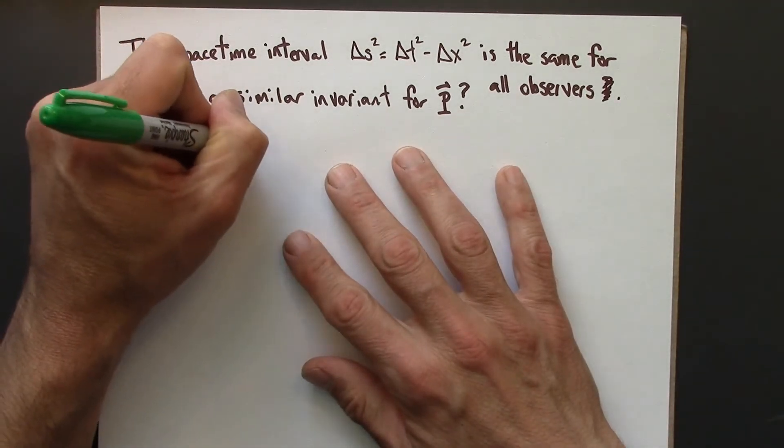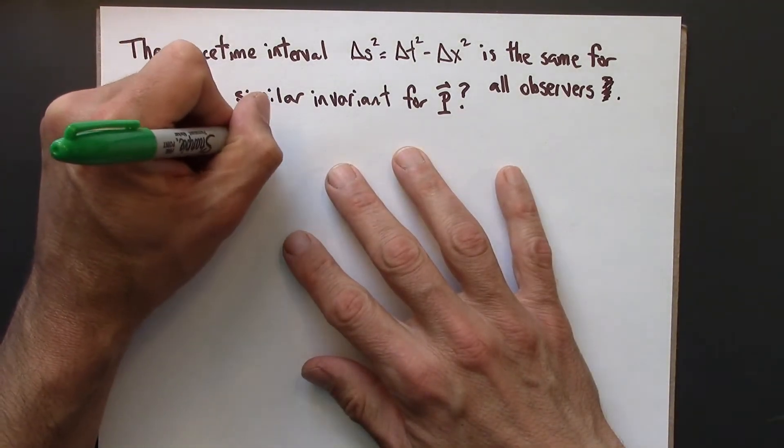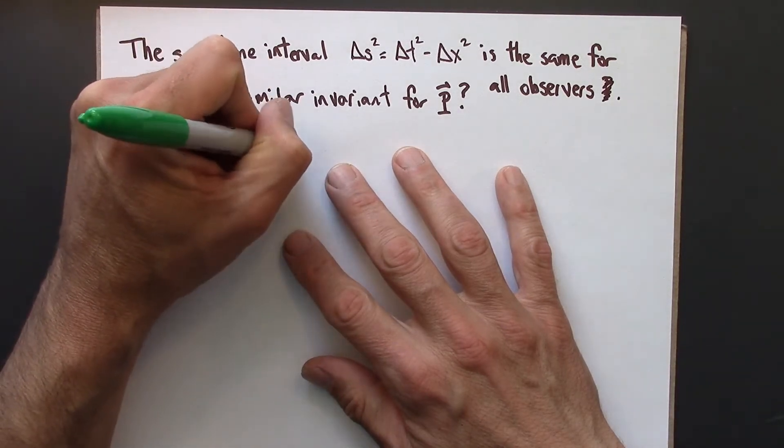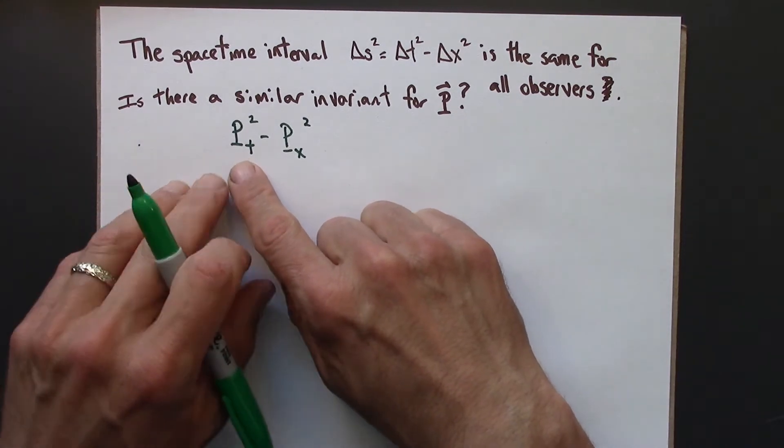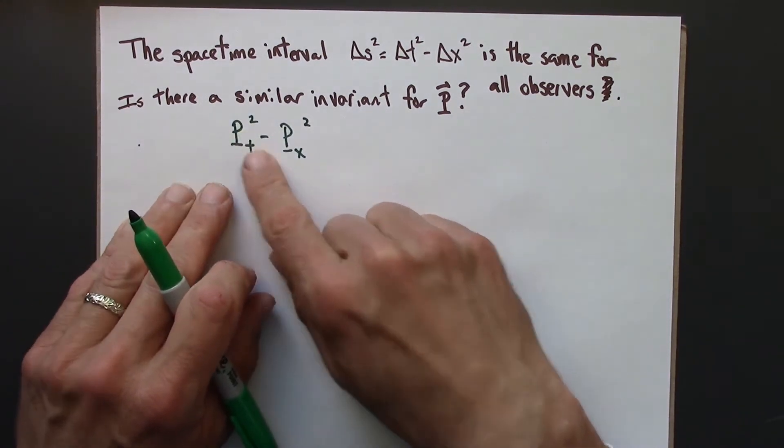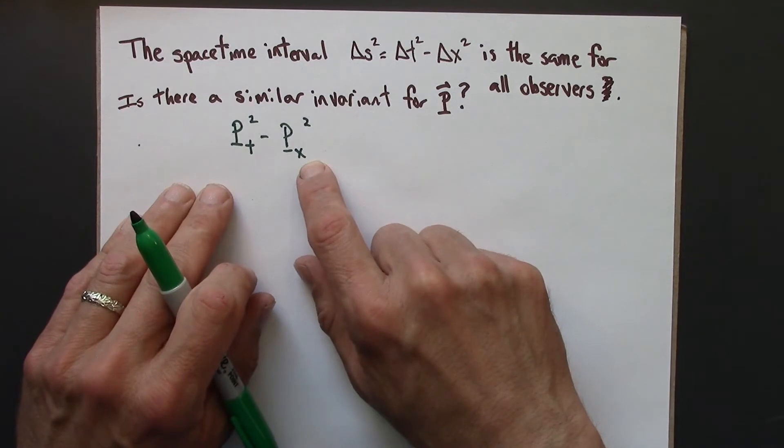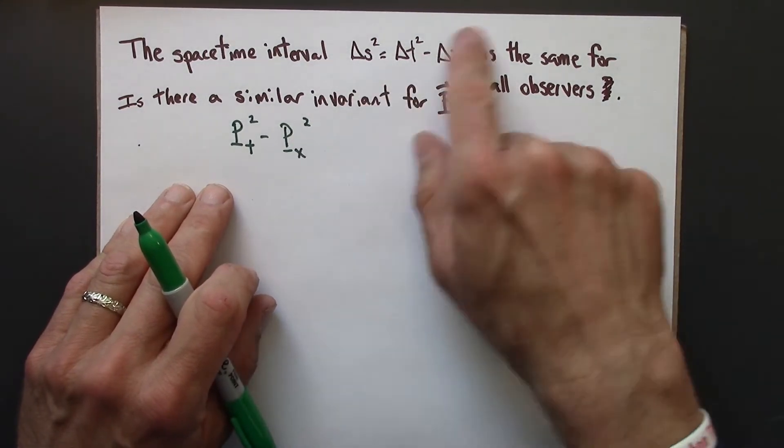And the quantity that I want to focus on is this. So this quantity says take the t component of momentum, square it, and subtract from that the x component of the momentum squared. Very similar to this.